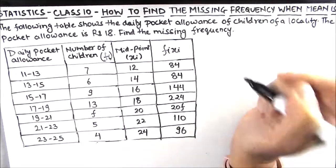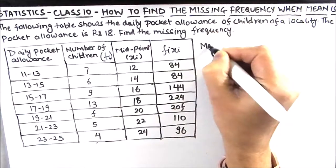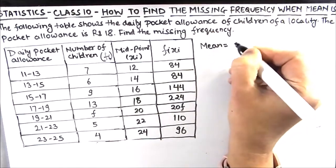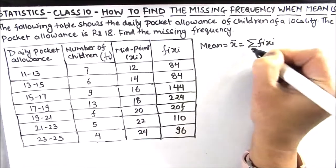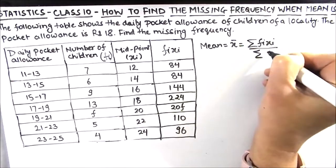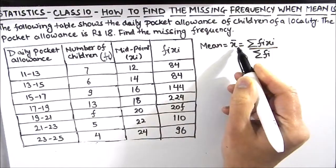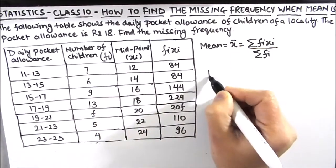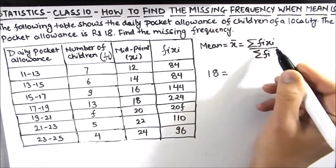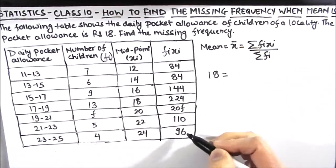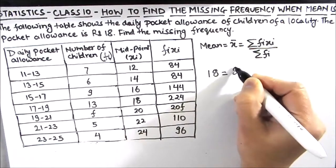So the formula we are going to use is mean equals summation of fi·xi divided by summation of fi. So our mean is given as 18, so we are going to write 18 here. And then summation of fi·xi will be addition of all these numbers here on the last column.